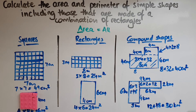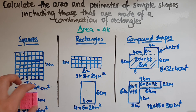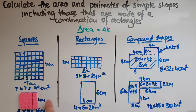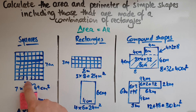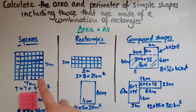To recap: area covers it all, so we multiply to find how many squares fit inside the shape. For compound shapes, split them into two smaller rectangles and add their areas. Notice that for squares, the answer is always a square number: seven times seven gives 49, four times four gives 16, and six times six gives 36. So all areas of squares will be square numbers.